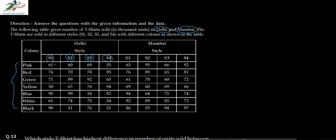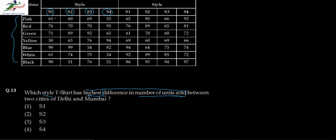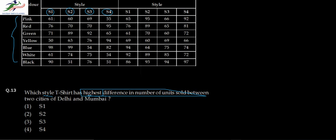The first question asks which style T-shirt has the highest difference in the number of units sold between the two cities. We can do this in two ways: add up all numbers for one style across both cities and take the difference, or take the individual differences and add them up. The second method is slightly less time-consuming as we deal with lower numbers.